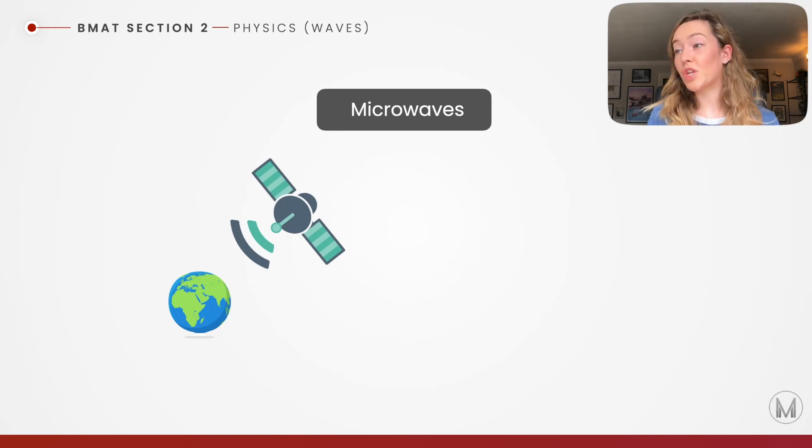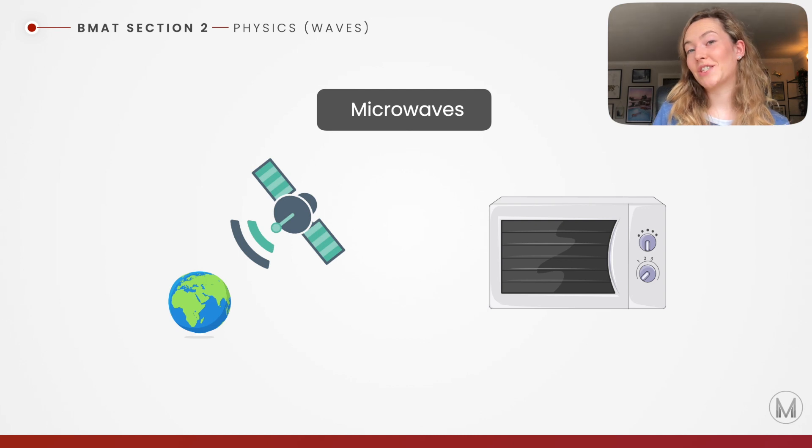Microwaves can be used in communication for satellites and mobile phones. They can also be used to heat food, as I'm sure you've realised at home. The microwaves can be absorbed by water molecules in our food.